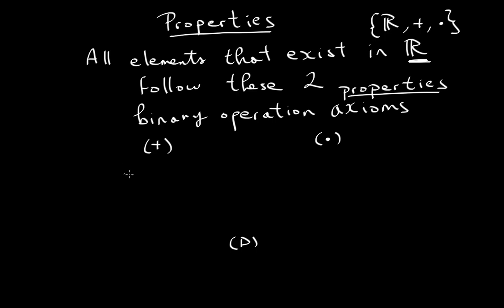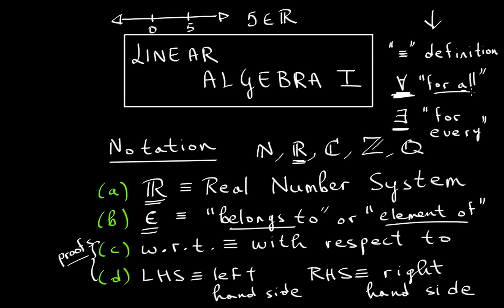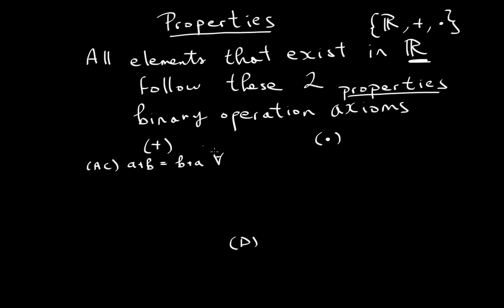The first property is additive commutativity, which says A plus B equals B plus A, for all A and B which are elements of the reals. Don't be confused by the upside-down A — it means 'for all.'